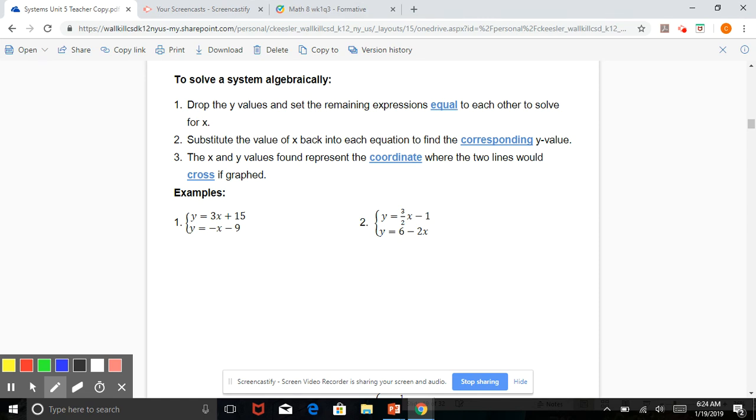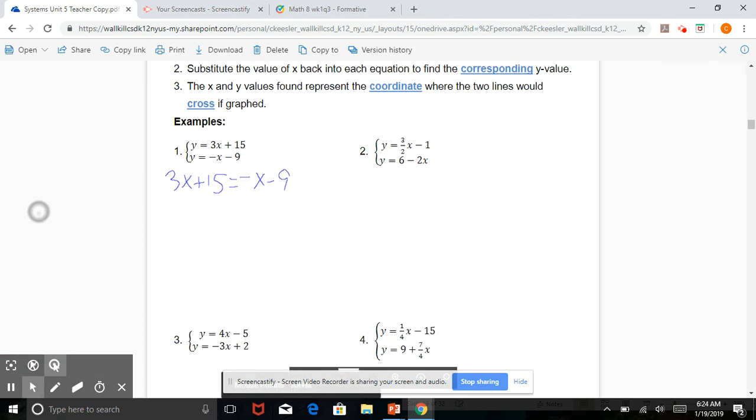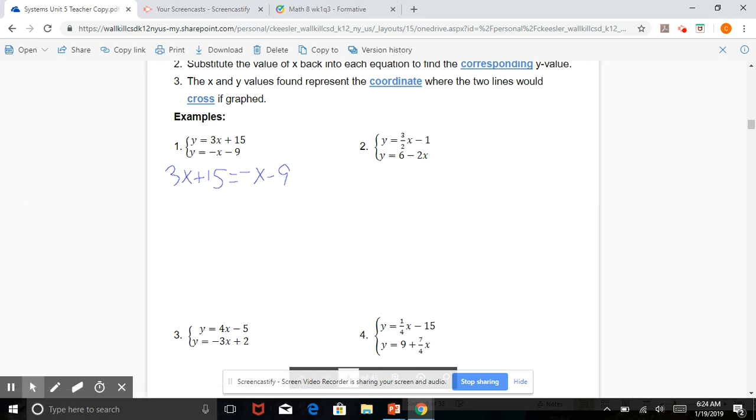So taking a look at number one, just like the directions state, we're going to drop the y values and set 3x plus 15 equal to negative x minus 9. From there, we solve it like any other equation.